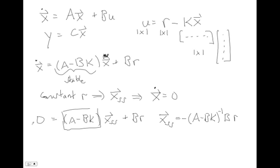It's going to equal minus A minus BK inverse times B times R. I brought this BR over to the other side, so it became a minus BR, and then I multiplied on the left side by the inverse of A minus BK. So that's my steady state x value, and I can find my steady state y value by just looking at y is just c times x. So that just simply equals minus c times A minus BK inverse BR. So I now know the value that my y will go to if I give it some R. It will go to R times this thing, and this thing is a 1 by 1 thing.